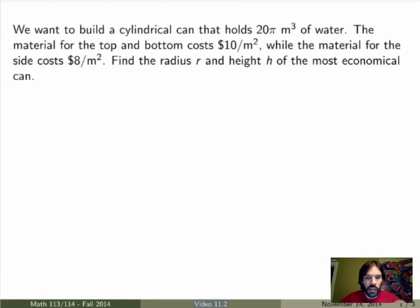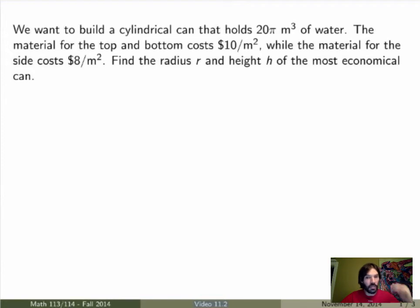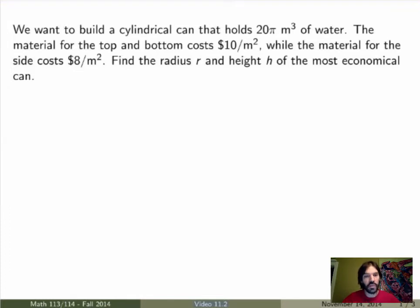Here's the example. Suppose we want to build a cylindrical can that holds exactly 20π cubic meters of water, so the volume is fixed. The material for the top and bottom of the can costs $10 per square meter, while the material for the side costs $8 per square meter. We want to find the radius r and height h of the can such that the cost is minimized — building the most economical can. This is a typical problem someone working in business could face.